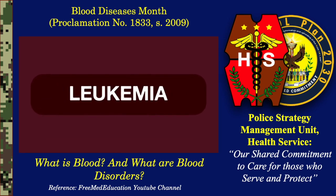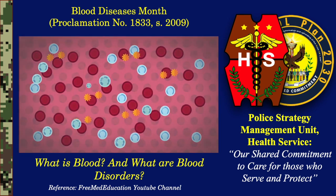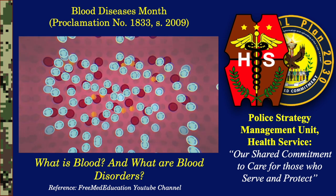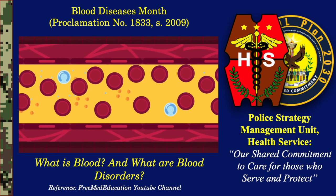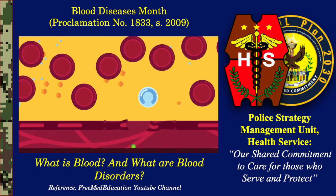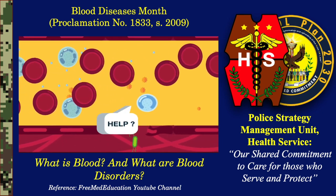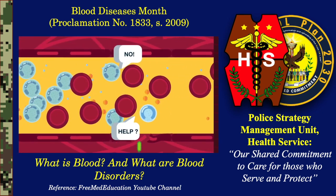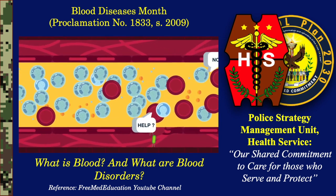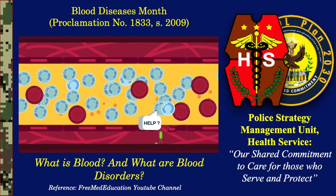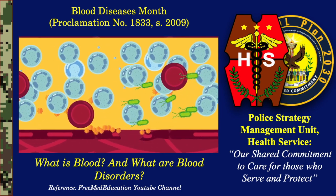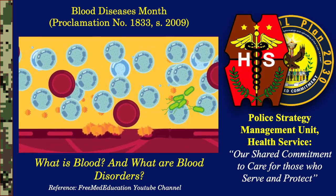Leukemia is blood cancer, in which malignant white blood cells multiply inside your body's bone marrow. Usually, leukemia involves the production of abnormal white blood cells — the cells responsible for fighting infection. However, the abnormal cells in leukemia do not function in the same way as normal white blood cells. The leukemia cells continue to grow and divide, eventually crowding out the normal blood cells. The end result is that it becomes difficult for the body to fight infections, control bleeding, and transport oxygen.